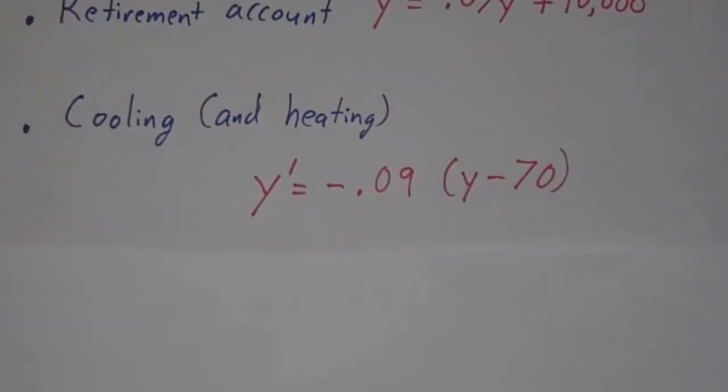Or maybe you just took a Thanksgiving turkey out of the oven, and the rate at which it's cooling is proportional to how much hotter it is than room temperature. We'll say room temperature is 70 degrees. So if the turkey is at 170 degrees, it's going to cool twice as fast as if it's at 120 degrees, because at 170 it's 100 degrees above room temperature, and at 120 it's only 50 degrees above.